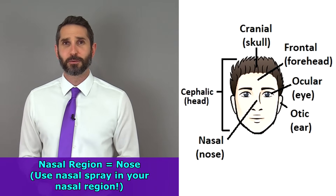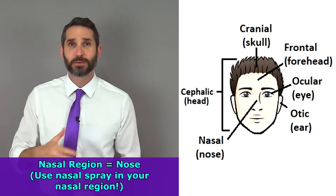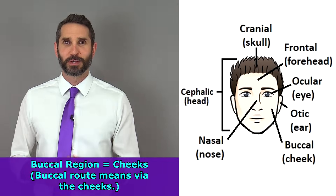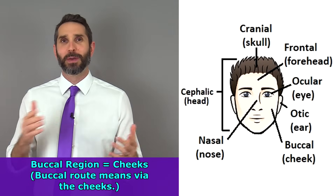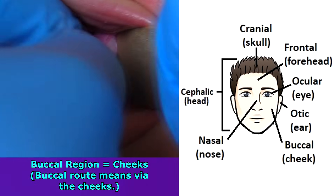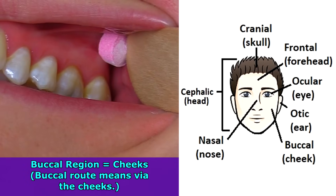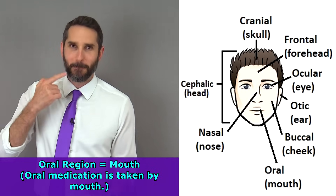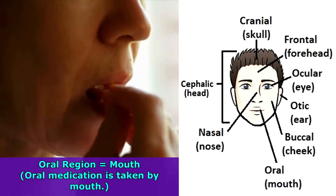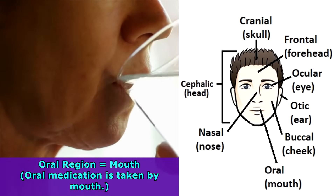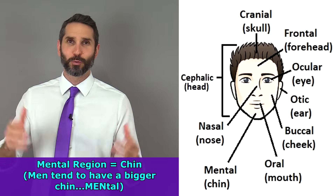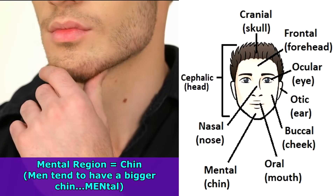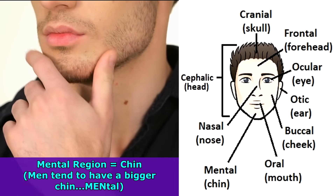The nasal region is of course the region of the nose — that's why you take nasal spray and squirt it up your nose. The buccal region is the area of the cheeks; medication administered via the buccal route is placed on the inside of the cheek. The oral region is talking about your mouth — if your doctor tells you to take medication orally, they mean by mouth. The mental region refers to the area of the chin; remember that men tend to have a bigger chin.